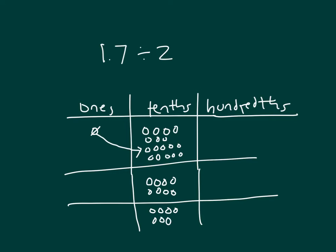So that's 16 of them, meaning I have to take one more and exchange it for hundredths. How many hundredths? Ten. And when I divide the ten-hundredths by 2, I get 5.